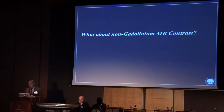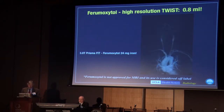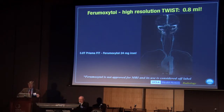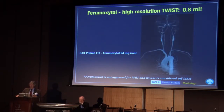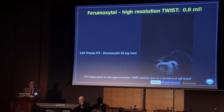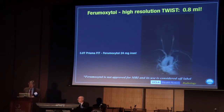What about non-gadolinium MR contrast agents? There is one we've been using for a couple of years with tremendous success — it's called ferumoxytol. It's an iron-based contrast agent and a pure intravascular agent, so it stays in the blood. It's approved by the FDA for treating iron-deficiency anemia in adults with chronic renal failure, but is not approved for MR imaging, so we use it off-label and monitor carefully for adverse events. We have had absolutely no issues so far in about 320 patients.